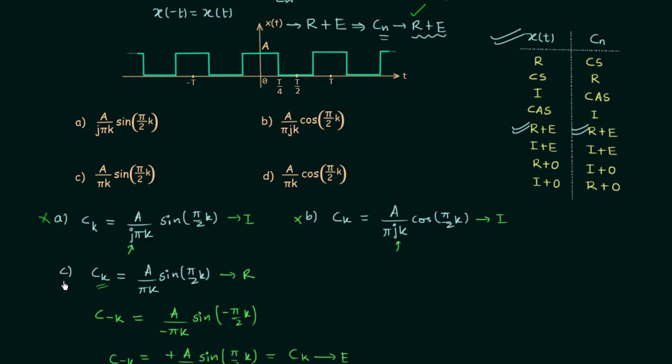But we will keep option C on hold because we are using the shortcut method and it is important to check option D as well. In option D CK is equal to A over pi*K cos(pi/2*K), and as there is no j in the expression it is purely real.